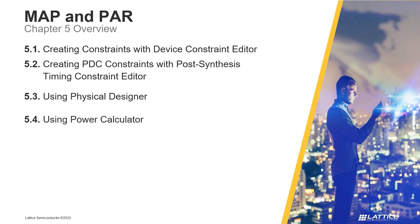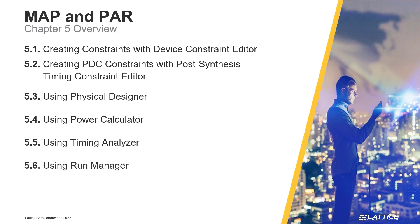In the fourth section of the chapter, Using Power Calculator, we will discuss Radiant's Power Calculator tool and how it can be used to calculate the static and dynamic power consumption of a design. In the fifth section, Using Timing Analyzer, we will discuss Radiant's Timing Analyzer tool and how it can be used to check a design's timing performance after place and route. In section six, Using Run Manager, the Run Manager tool will be introduced, as well as how it can be used to run the project flow for multiple implementations in a project.